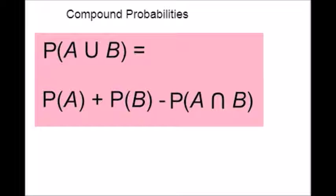The outcome of a random experiment is known as events. There can be more than one number of events associated with an experiment. A compound event consists of two or more number of simple events.